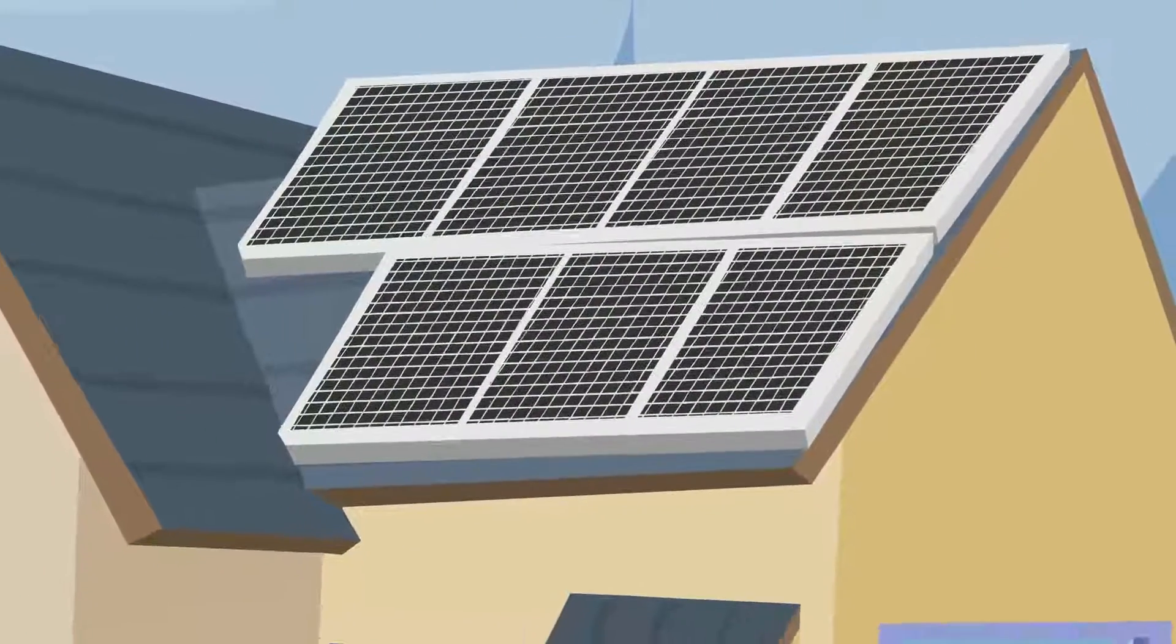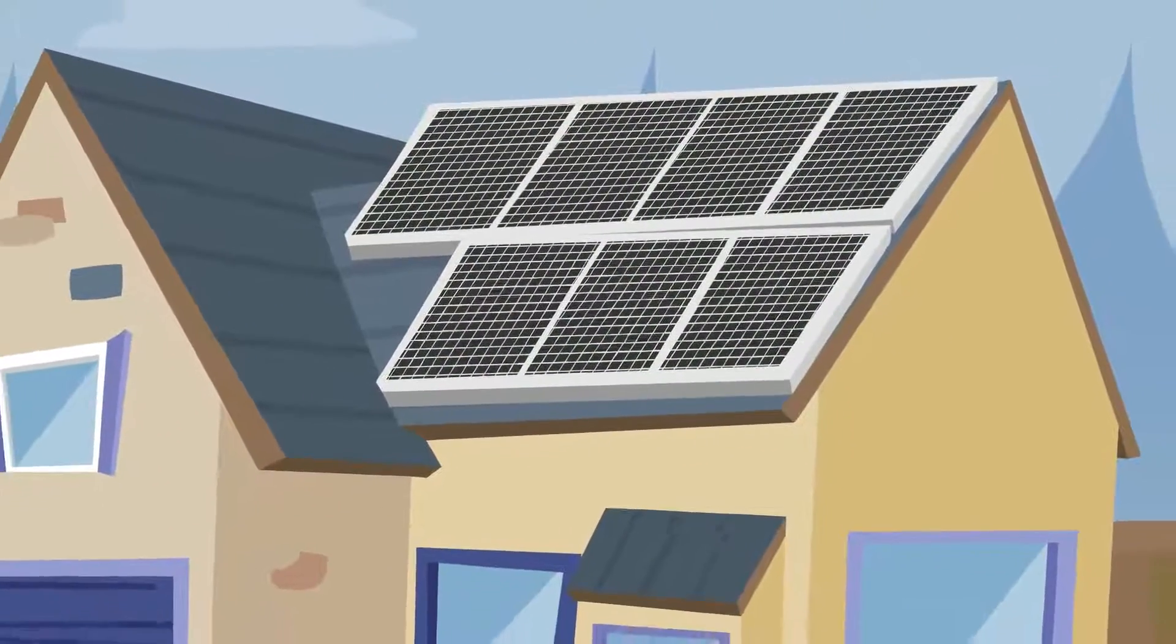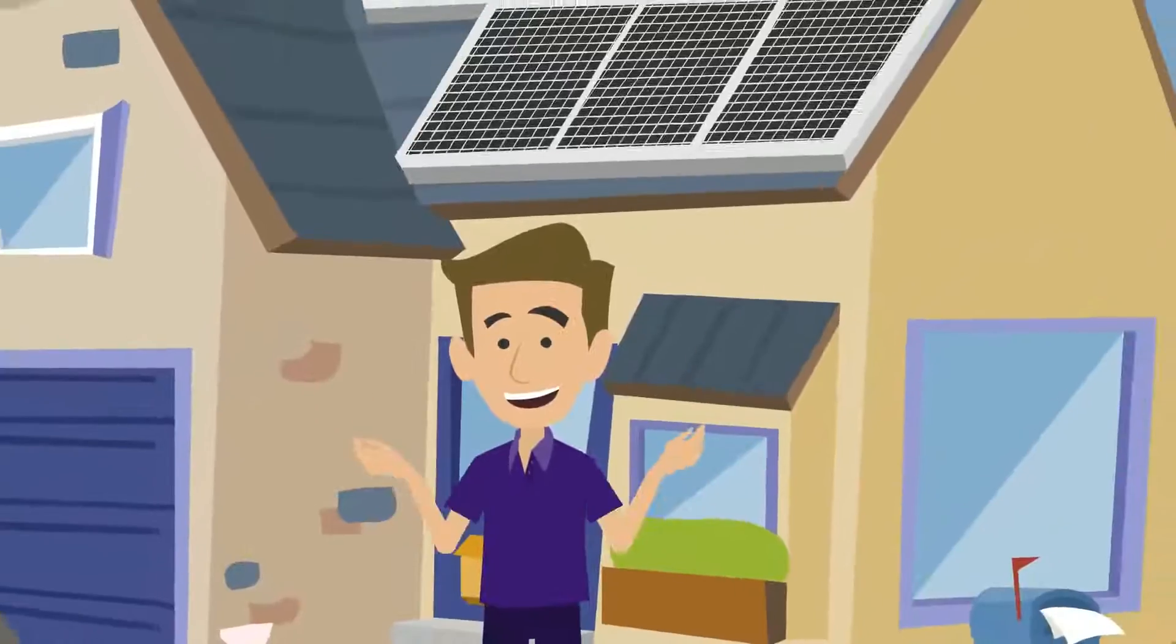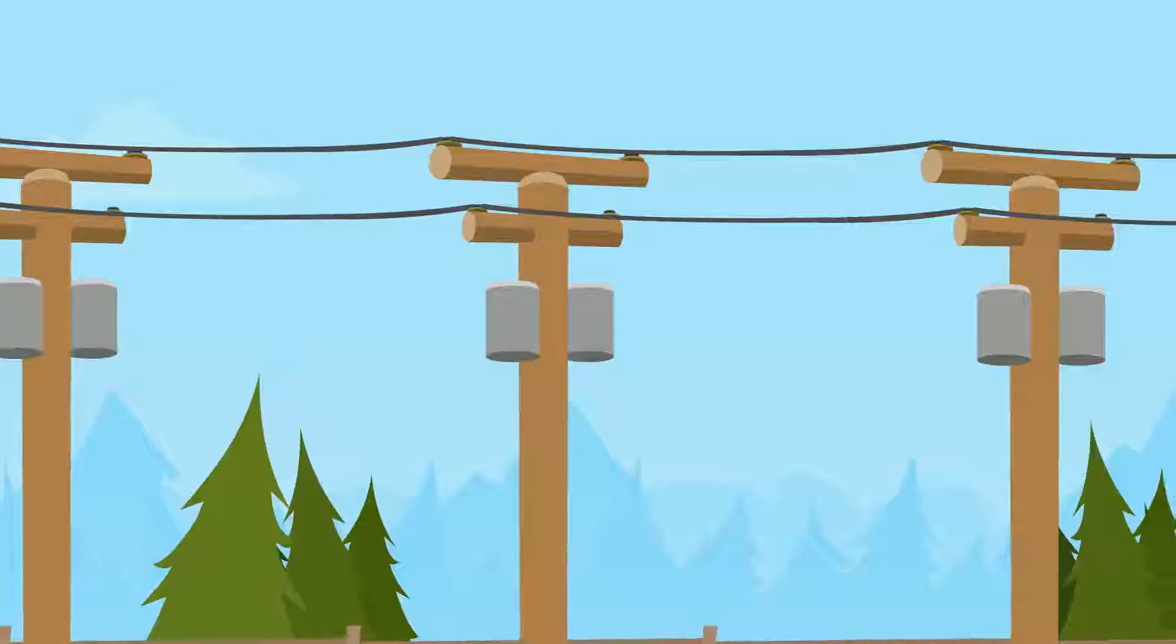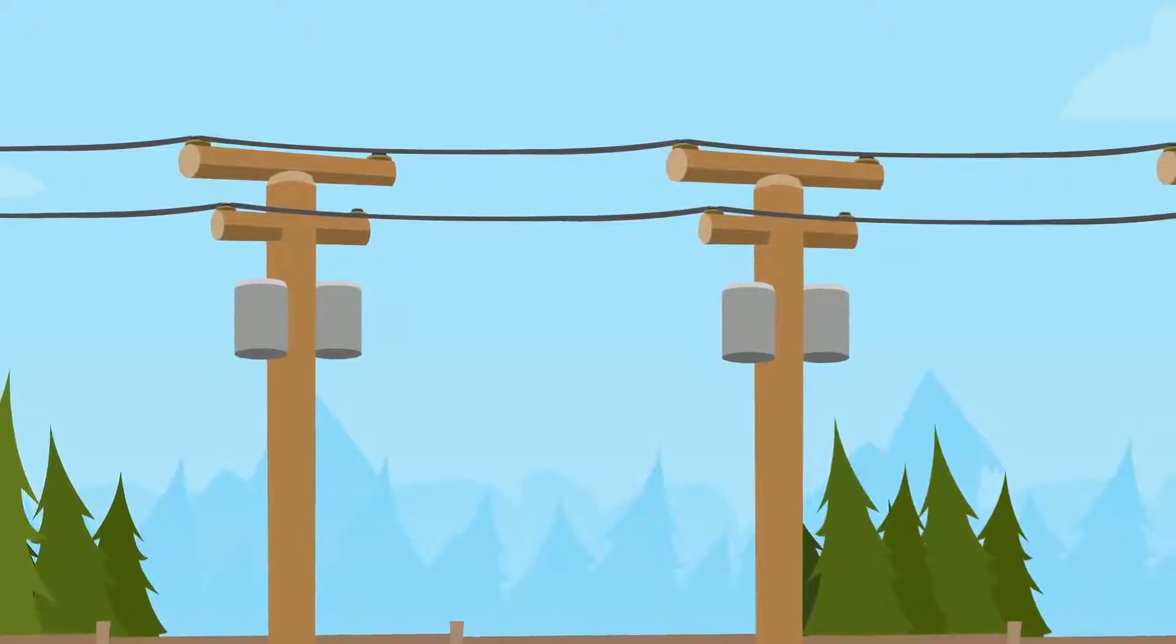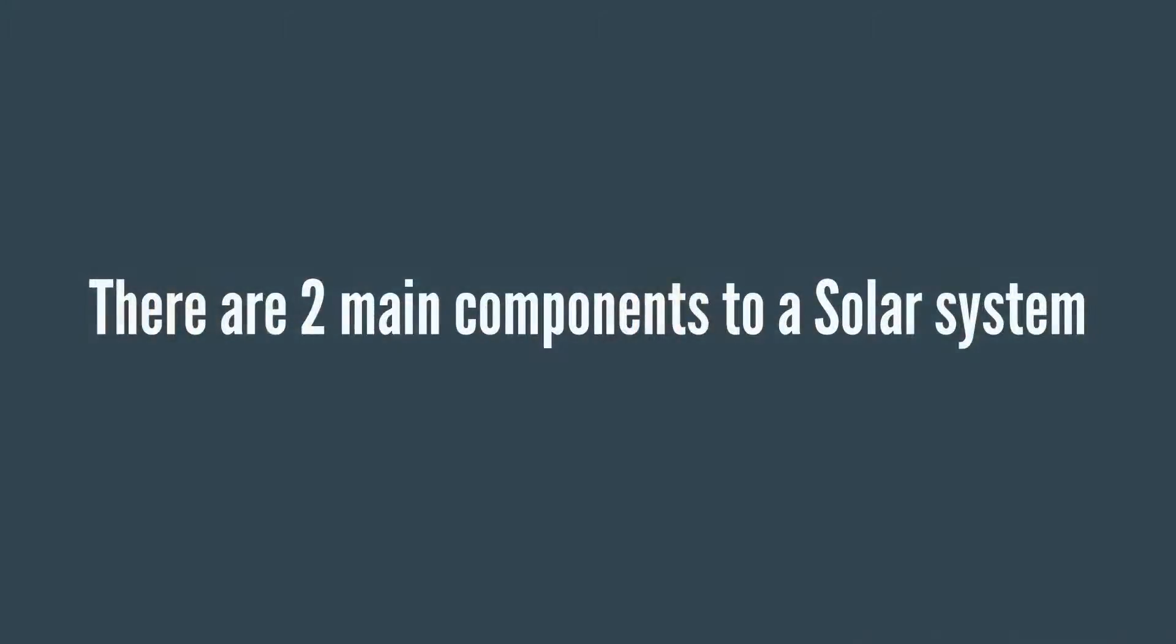A solar system is just like your own mini power station and your property will use the free power from this solar system before it takes what it needs from the electricity grid. There are two main components to a solar system.